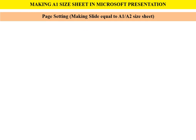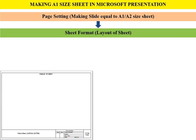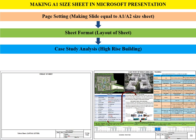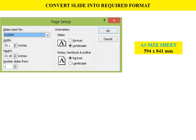We will be learning about page settings — that is, how to make slides into A1, A2, or any size. Next we'll learn about sheet format, that is the layout of the sheet. Third, we will be learning about case study analysis of a high-rise building. And last, which is very important, is ways of presentation.